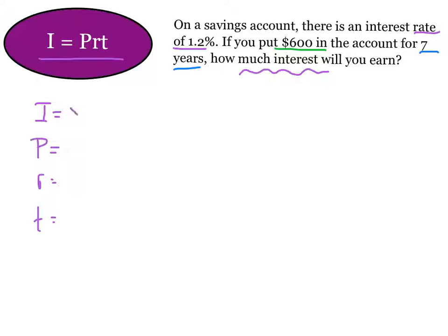P stands for principal or the amount we invest. We put in $600. So our principal is $600. The rate is 1.2%. However, remember it has to be in decimal form. So let's change it right now to .012 for the rate. And our time, seven years. And remember, we need to make sure time is in years. And we're good on that.